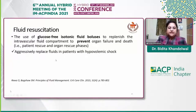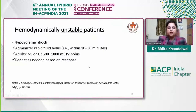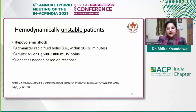In the fluid resuscitation phase, glucose-free isotonic fluid is given as a bolus to replenish the intravascular fluid compartment, with the goal of preventing organ failure and death. For hemodynamically unstable patients in hypovolemic shock, within 10–30 minutes, 500–1000 ml is given as a bolus. Both NS and LR are used, but LR is much preferred for its balanced nature, and you can repeat the bolus depending on the response.